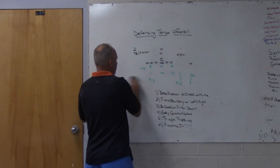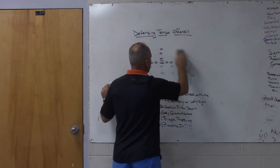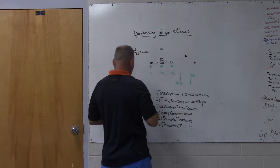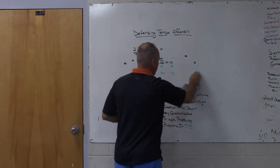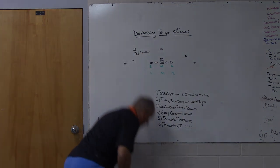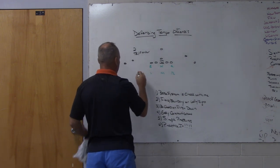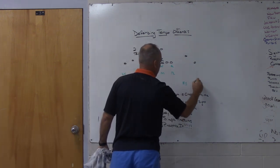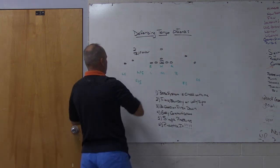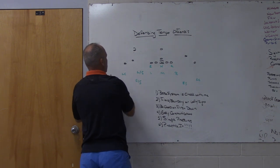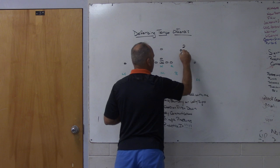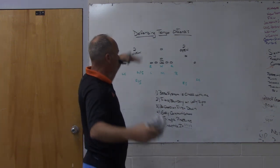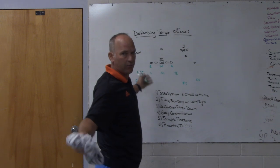If we got a two-by-two set — all of a sudden they come out two-by-two with two open here and two open back here — our system is already built in. That's two open: we're going to play our two-read coverage, which is part of our coverage toolbox. So now we're going to play two-read on this side, and our ram would bump a little bit on the other side. Two open here and two open on this side — we know how we play two open. We play it to both sides if it's part of our base defense. So we're playing two-read, or palms — whatever you want to call it — to both sides if we get two open. So we're already ready to handle that.